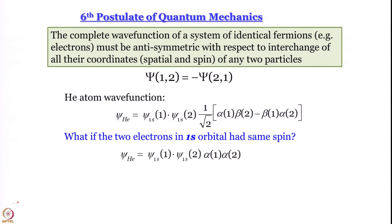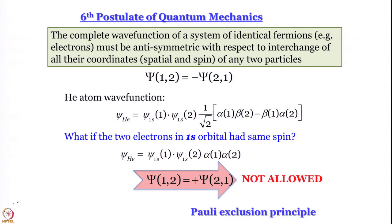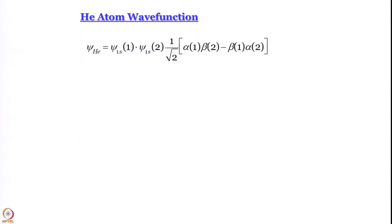If two electrons in the 1s orbital have the same spin, we get α(1)α(2) × ψ_1s(1)ψ_1s(2), which is symmetric with respect to exchange. Since it is symmetric, it fails the test of the sixth postulate of quantum mechanics and cannot be accepted. Upon applying the exchange operator you get back the same wave function with no change in sign. The only allowed wave function is (1/√2)[α(1)β(2) − β(1)α(2)] times the spatial part.